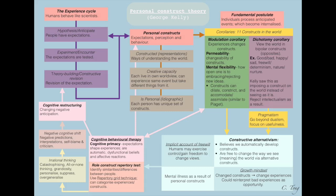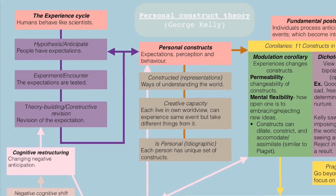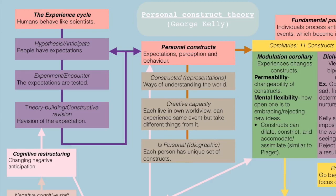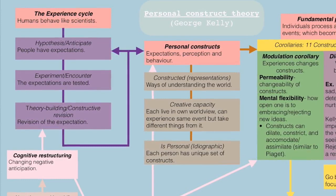He came up with this theory during a time when the behaviorists dominated in psychology. Personal construct theory is organized as follows: the first notion is that humans behave like scientists in that we hypothesize and anticipate. When people have expectations, we experiment and encounter where the expectations are tested. We also conduct theory building and have constructive revision, which is the revision of the expectation.